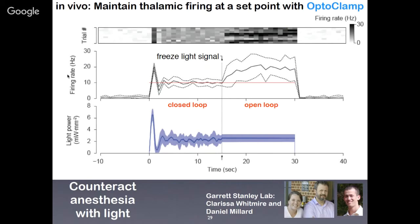We were so successful with that in vitro that we did an in vivo experiment in collaboration with Garrett Stanley's lab. Clarissa Whitmire and Daniel Millard had rats; we implanted fiber optics into their thalamus — specifically their somatosensory thalamus, which processes whisker signals. For rats, whisker information is very important for navigating in the dark. We could send light signals that would act as false sensory information, making the rat perceive it was touched on its whiskers. You could also use this to counteract anesthesia with light and do experiments on anesthetized animals that you normally couldn't do.